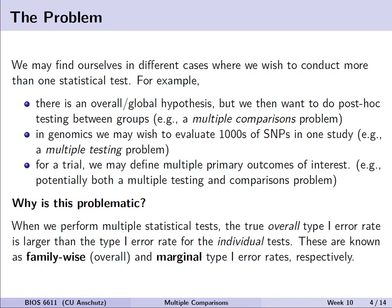In genomics or proteomics, we may wish to evaluate thousands of SNPs in a single study, and this would represent a case of a multiple testing problem, where we are using the same set of data to conduct multiple tests. In the case of a clinical trial, we may define more than one primary outcome of interest, which would then present both a multiple testing and potentially comparison problem, depending on what our outcome was and how we define the analysis.